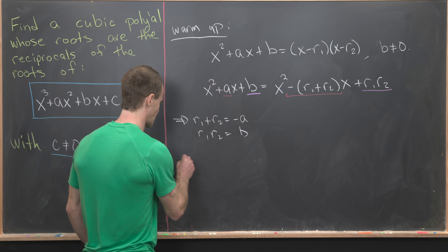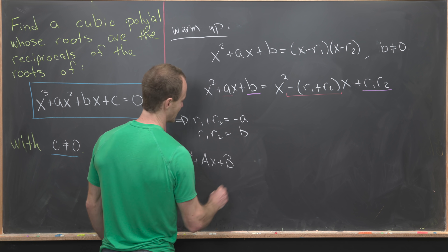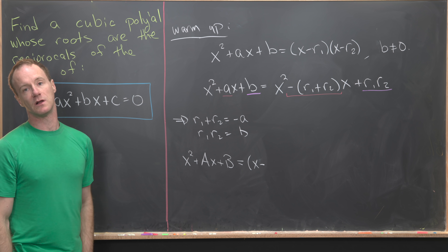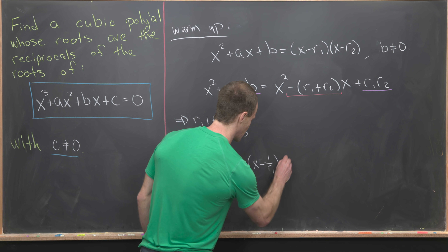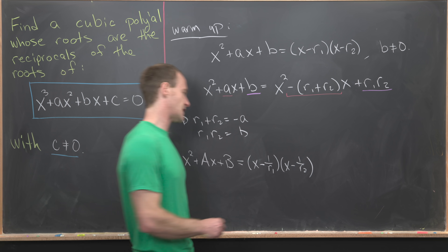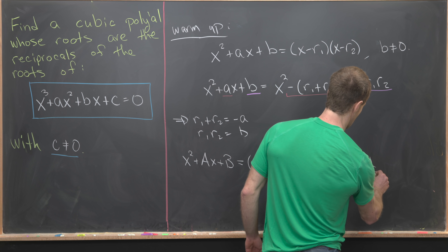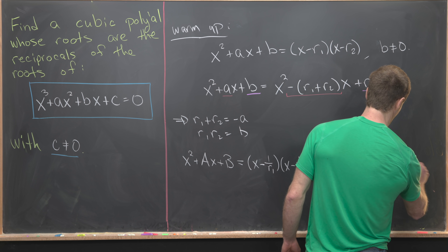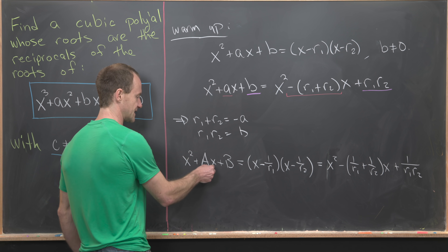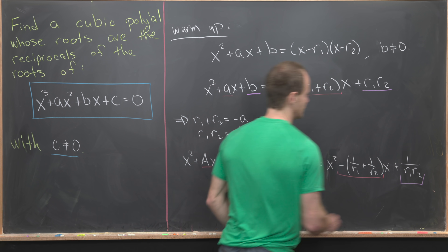Now we want to construct a new polynomial, x squared plus capital A times x plus capital B, whose roots are the reciprocals of our original polynomial. So it factors as x minus 1 over r1 times x minus 1 over r2. Multiplying out the right-hand side gives x squared minus (1 over r1 plus 1 over r2) times x plus 1 over (r1 times r2). Then we equate coefficients just like we did above: capital A equals negative (1 over r1 plus 1 over r2), and capital B equals 1 over (r1 times r2).